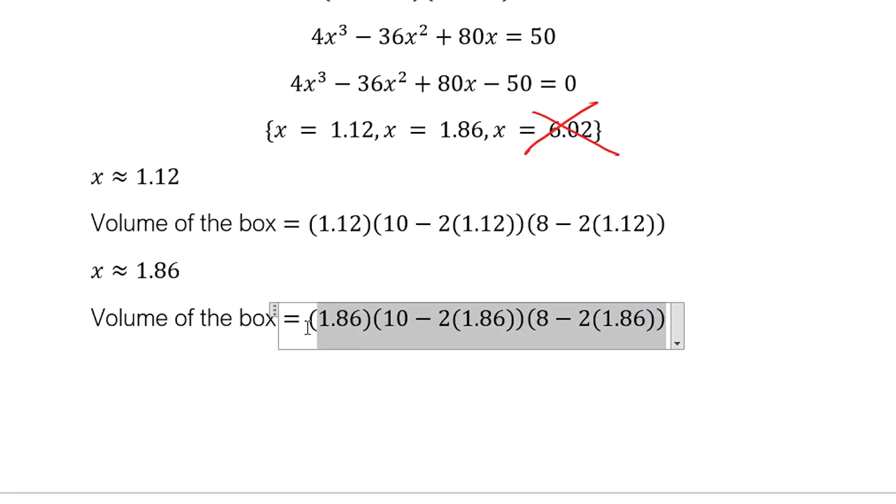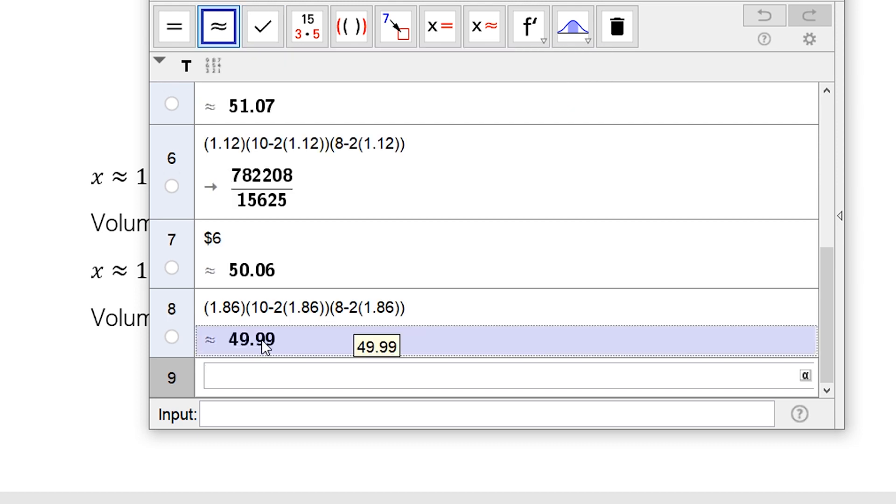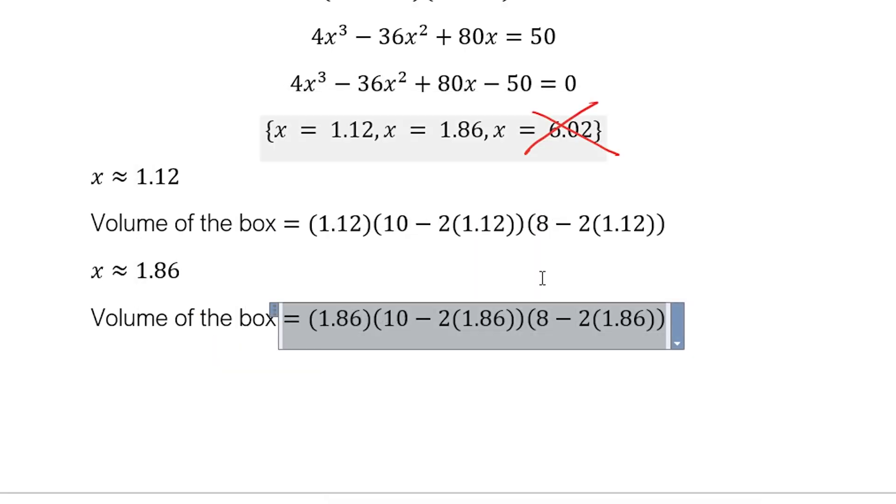Okay, and then let's copy this, then put it in GeoGebra again. Let's remove the equal sign. And then let's have this one. The answer is 49.99, which is 0.01 away from 50. So that verifies also that 1.86 is also a solution of our problem.